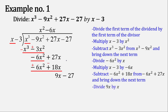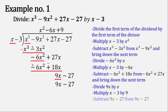Now 9x divided by x is 9. Multiply 9 by the divisor x minus 3: 9 times x is 9x, and 9 times negative 3 is negative 27. Let's change the sign — this will cancel out, and this will also cancel out, giving us a sum of 0. So this is the completed long division of the polynomial expression.